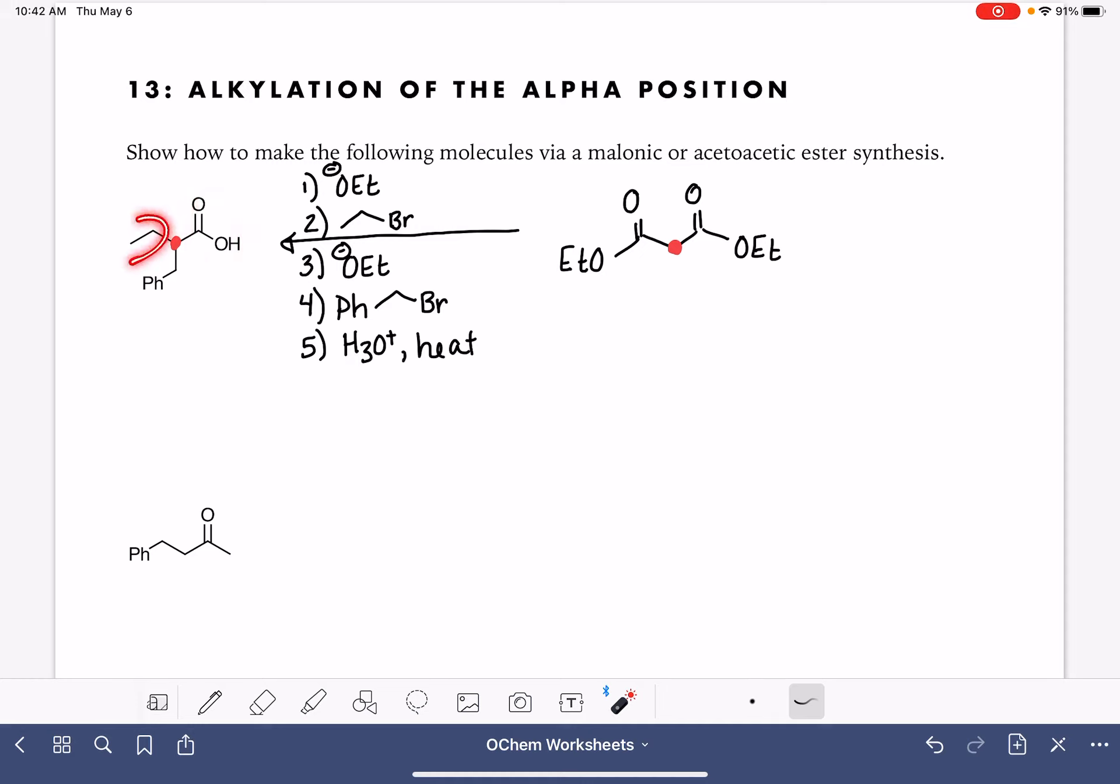If you only wanted to add one alkyl group, you would just not have steps three and four. This would be your step three.